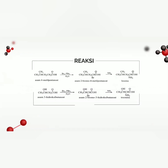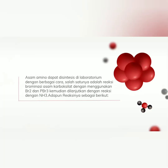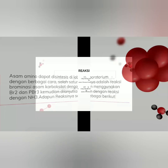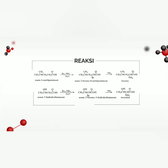Asam amino dapat disintesis di laboratorium dengan berbagai cara. Salah satunya adalah reaksi brominasi asam karboksilat dengan menggunakan PBr2 dan PPr3, kemudian dilanjutkan dengan reaksi dengan NH3. Reaksinya yaitu asam 4-metil pentanoat direaksikan dengan PBr2, PPr3, dan air menghasilkan asam 2-bromo-4-metil pentanoat, kemudian direaksikan dengan NH3 menghasilkan leusina. Kemudian asam 3-hidroksibutanoat direaksikan dengan PBr2, PPr3, dan air menghasilkan asam 2-bromo-3-hidroksibutanoat, kemudian direaksikan dengan NH3 menghasilkan treonina.